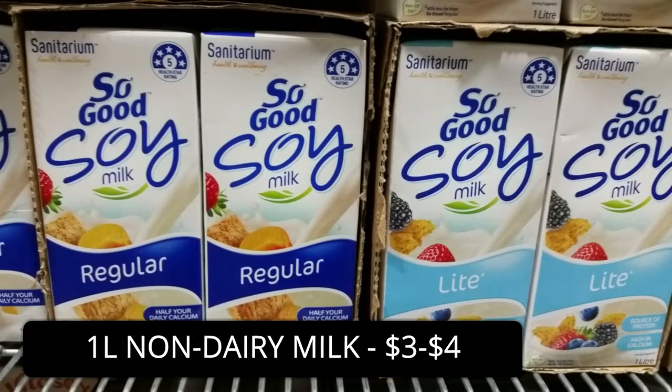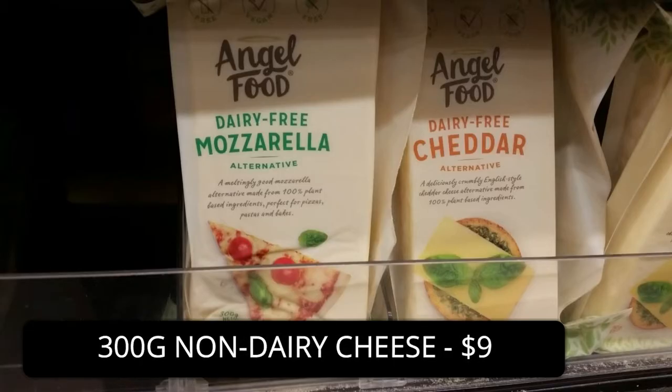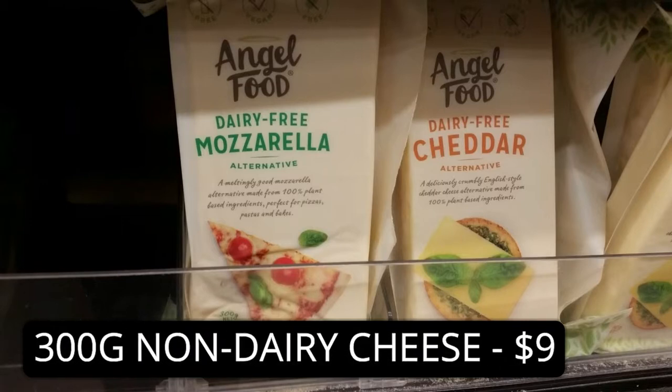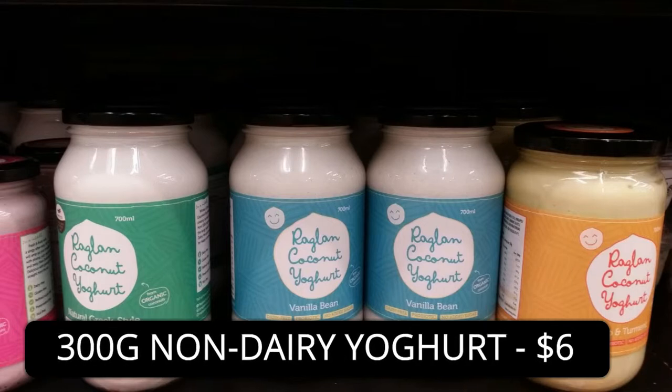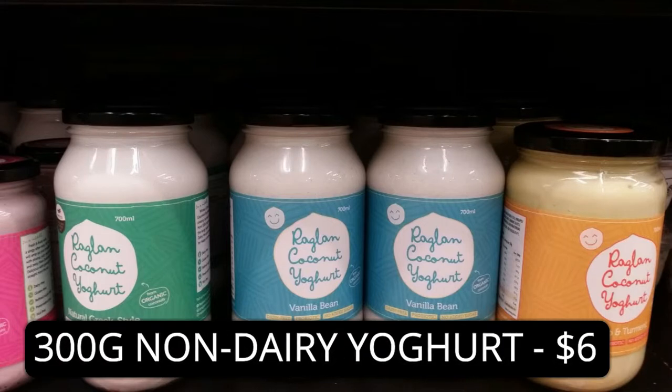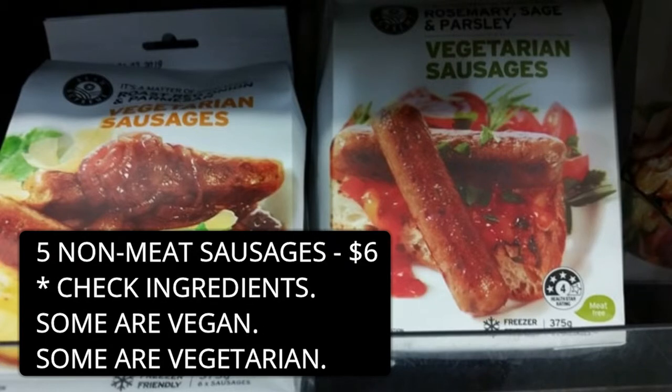For vegan substitutes, one litre of non-dairy milk is around $3.00 to $4.00. 300 grams of non-dairy cheese is around $9.00. 300 grams of non-dairy yogurt is approximately $6.00. And a pack of five non-meat sausages is approximately $7.00.